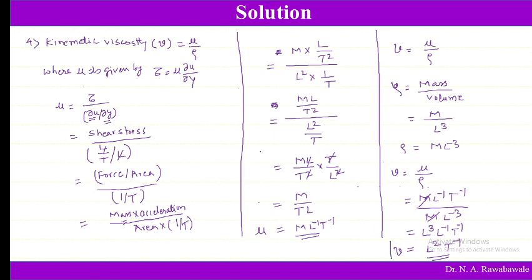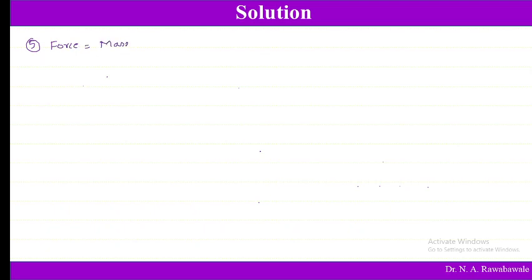Force is mass into acceleration. The dimension for mass is M, and dimension for acceleration is length per square time, L/T². So force has dimension M·L·T⁻².